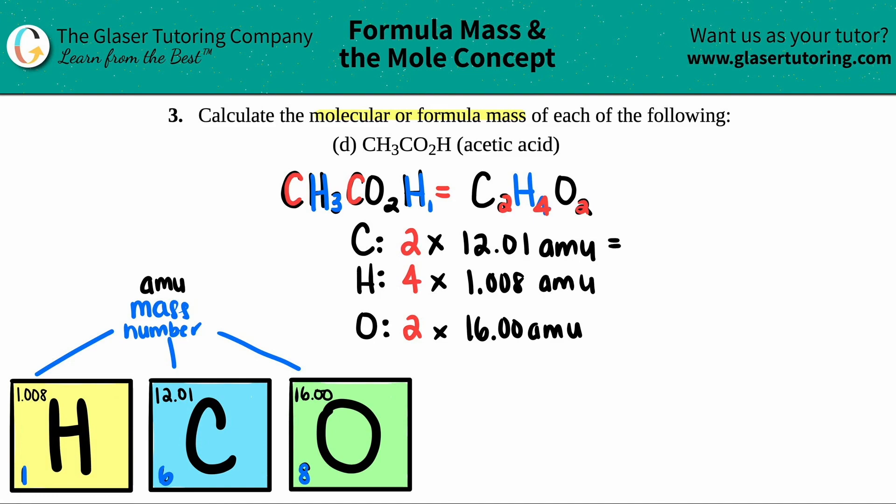Let's find out these numbers. Two times 12.01 is 24.02. So that's how many total AMU is in my compound of carbon. Then 4 times 1.008, I get 4.032 AMU for the total amount of hydrogen. And then 2 times 16 is 32.